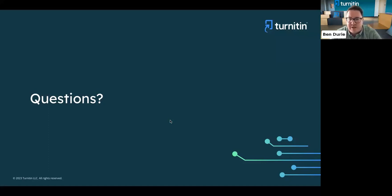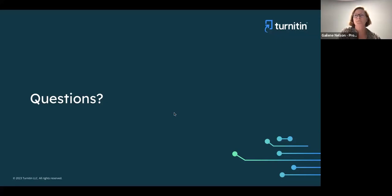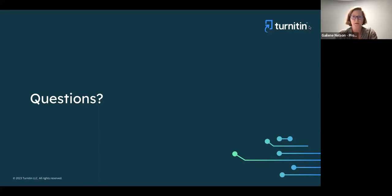Question: what is the link between this product and the ghost writing one — authorship? They're separate products at this point. From a strategic perspective there's value in adding detection signals within the authorship capability, but for now they are separate products. Question: if a customer licenses Feedback Studio with originality, is it possible to just see AI writing as part of the originality report and not have to look at it via Feedback Studio? Yes — you can disable it in Feedback Studio and enable it in originality. You don't have to have it show up in both.